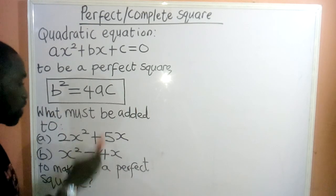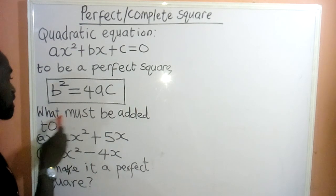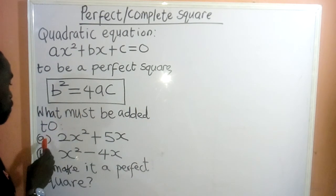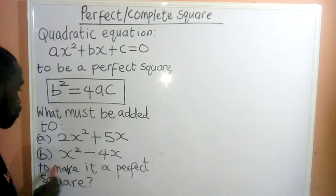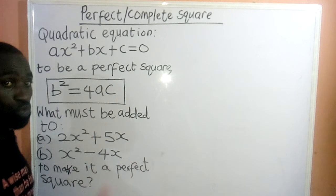Here, we have two questions to be solved. Class, what must be added to 2x² + 5x, x² - 4x to make it a perfect square?